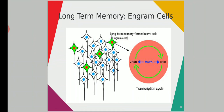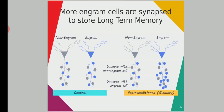Engram cells are special — you can see them as the green-colored cells, while the remaining are red and blue colored. These special nerve cells have long-term memory formed within them. These special nerve cells have an altered gene expression carried out by transcription factors, and MAPK kinase plays an important role here. These altered nerve cells are called engram cells — they are the units of long-term memory.